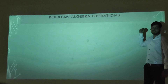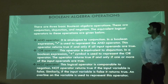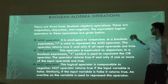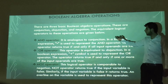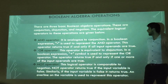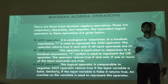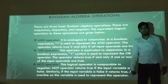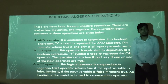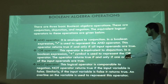The next topic is Boolean algebra operations. There are three basic operators used in Boolean algebra: the AND operator, the OR operator, and the NOT operator. The AND operator is analogous to conjunction and uses a dot as a symbol, similar to multiplication. The OR operator is equivalent to disjunction and uses a plus operation, by which we can write the binary values.